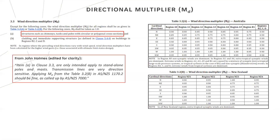The directional multiplier has caused a fair amount of consternation, particularly for pole structures where M_d is being set to one for all directions. We've had some clarity from John Holmes, particularly around transmission lines, which are very direction sensitive. Applying M_d from Table 3.2 should be fine as long as this is referenced by NZS 7000. The wind direction multipliers have changed slightly for some directions, but other than that it's about the same.